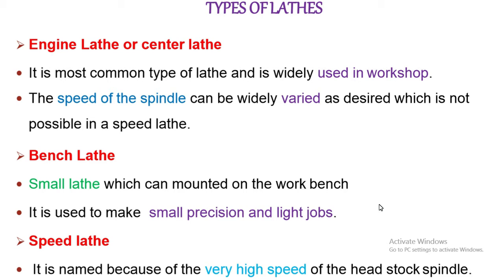The speed of the spindle can be widely varied, which is not possible in a speed lathe. This type of lathe was derived from and driven by steam engines. Similar to speed lathe, the engine lathe has got all the basic parts: bed, headstock, tailstock, compound rest, carriage, lead screw, feed rod, and gearbox.